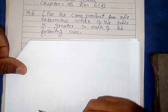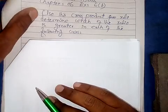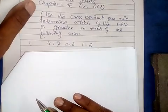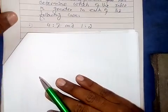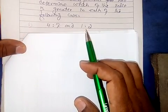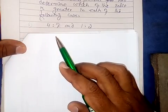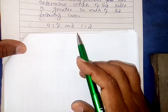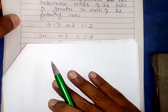Now we have a cross product rule to determine which ratio is greater in each of the following. So here the first question is 4 ratio 7 and 1 ratio 2. We have told you that ratio we can also write in division, so here we can also write